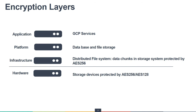Google Cloud uses several layers of encryption to protect the data. Using multiple layers of encryption adds redundant data protection and allows us to select the optimal approach based on the application requirement. All data stored in Google Cloud is encrypted at the storage level using the AES-256 algorithm, with the exception of a small number of persistent disks that were created before 2015.